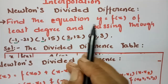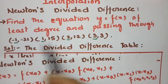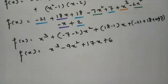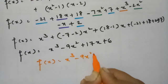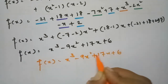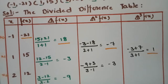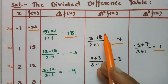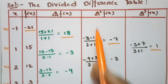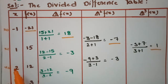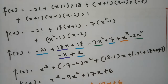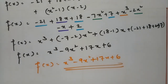So we found the equation of y = f(x) of the least degree passing through those points. The final answer is f(x) = x³ - 9x² + 17x + 6. This is how we solve using Newton divided difference — computing first, second, and third differences, then substituting into the formula.